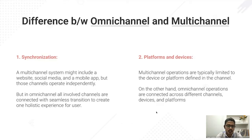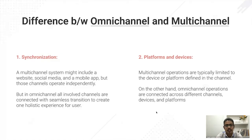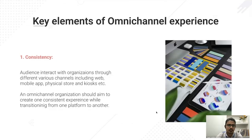The second difference involves platforms and devices. In multi-channel, every channel has a specific use restricted to that channel — for example, a website may only showcase a product and not allow the user to buy it. In omni-channel, the user can easily switch between channels to complete any activity, like switching from social media to an e-commerce website to buy a product.